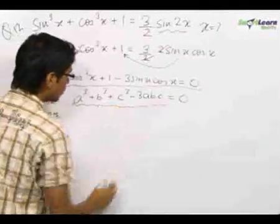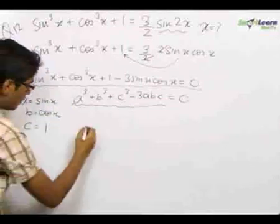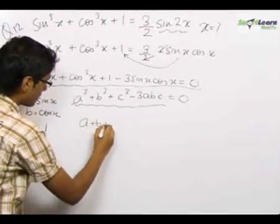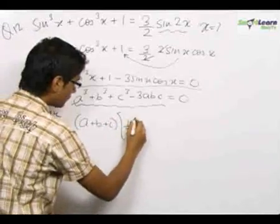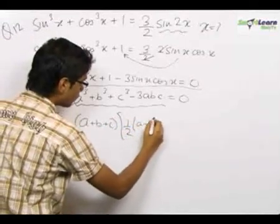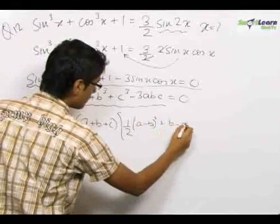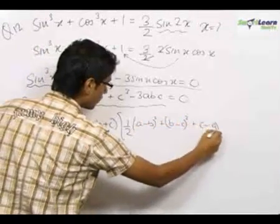Now, factorizing a³ + b³ + c³ - 3abc, we get (a + b + c) times half of [(a - b)² + (b - c)² + (c - a)²].